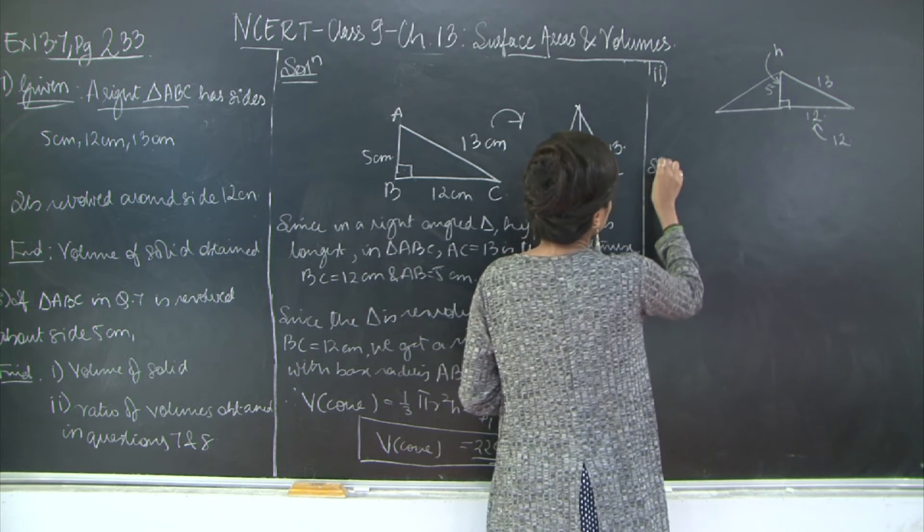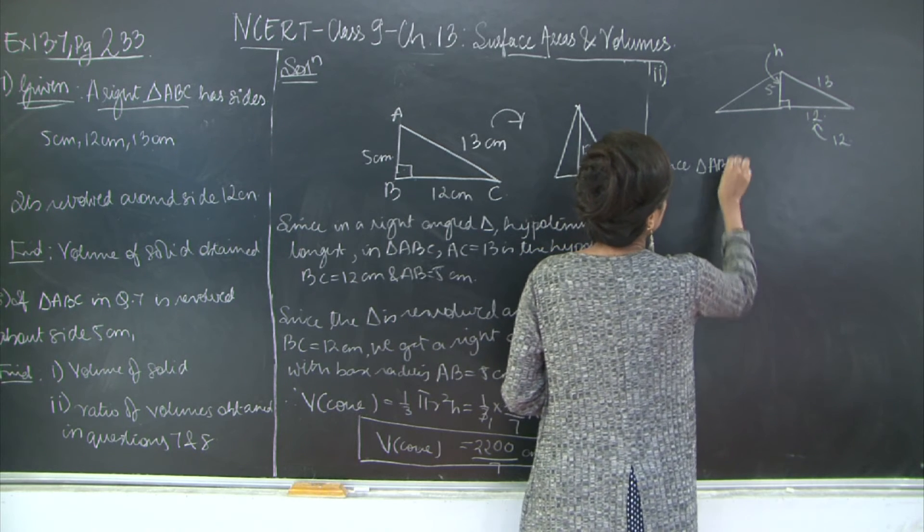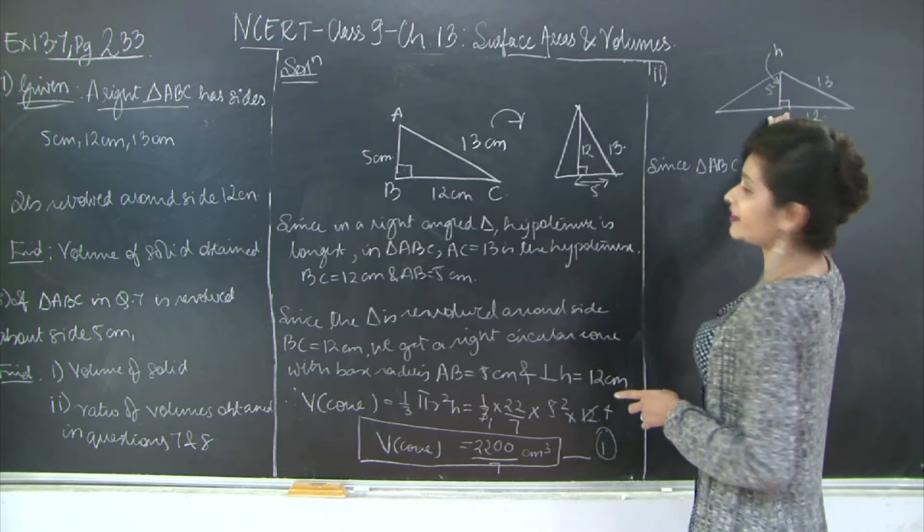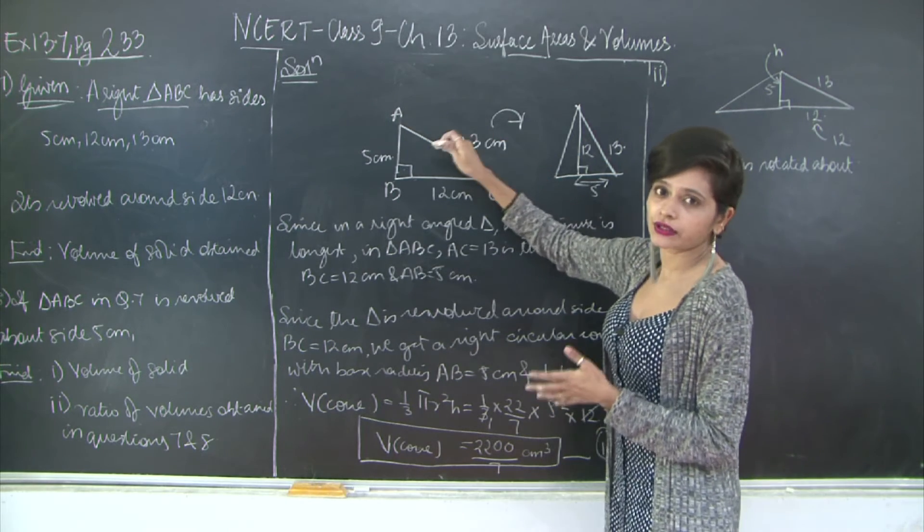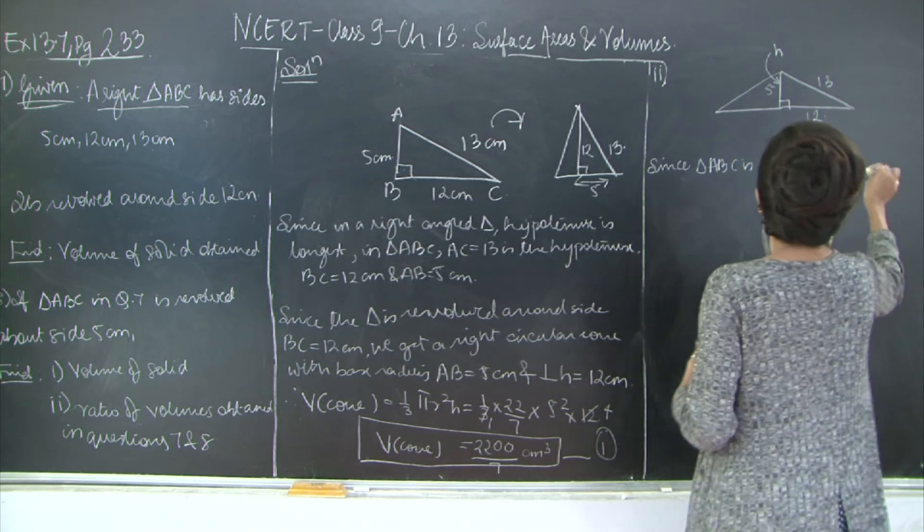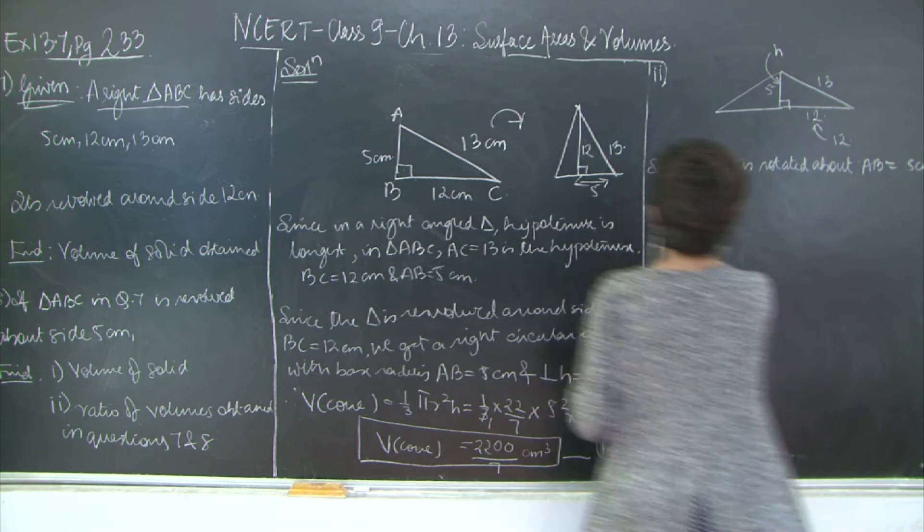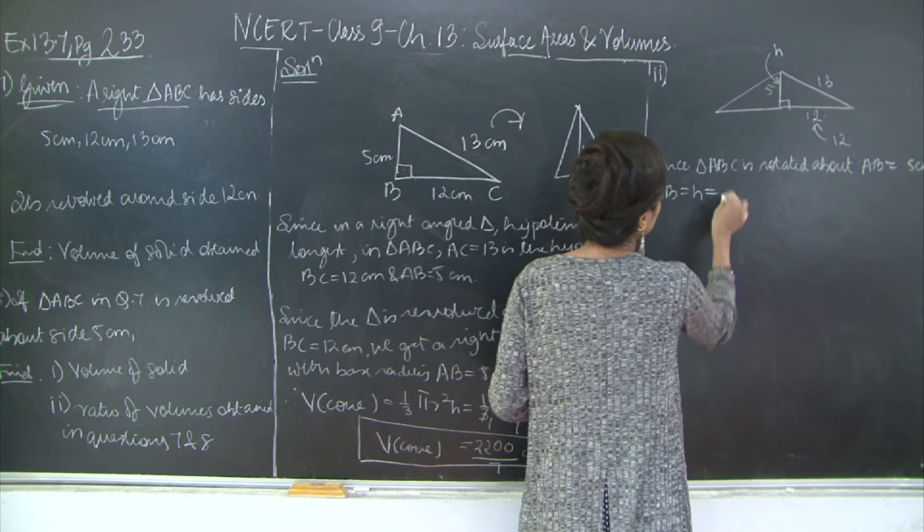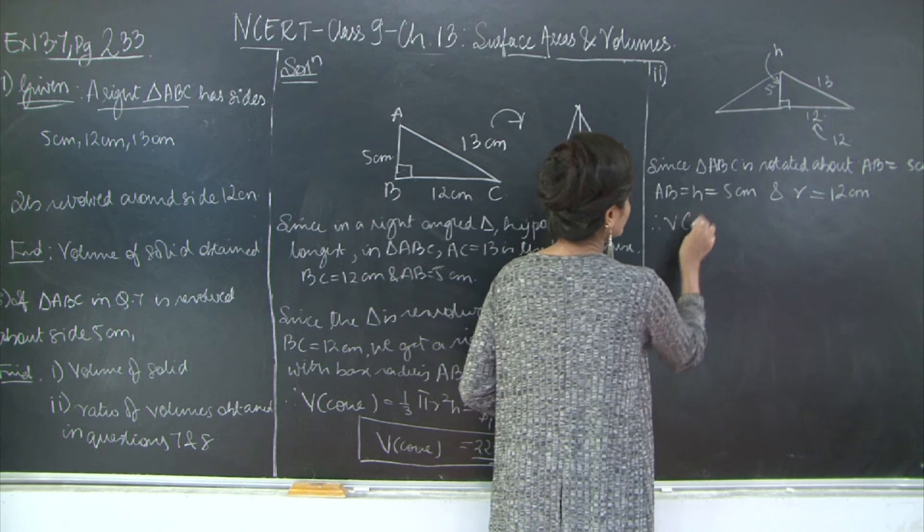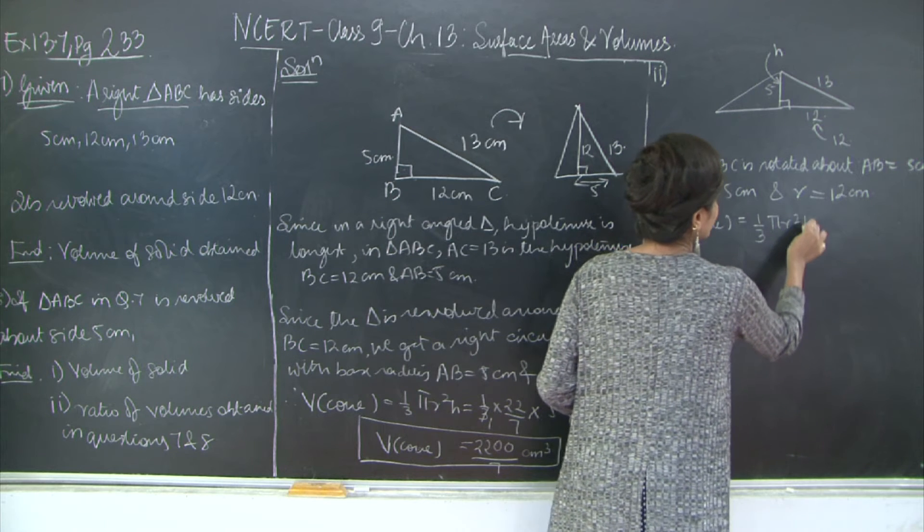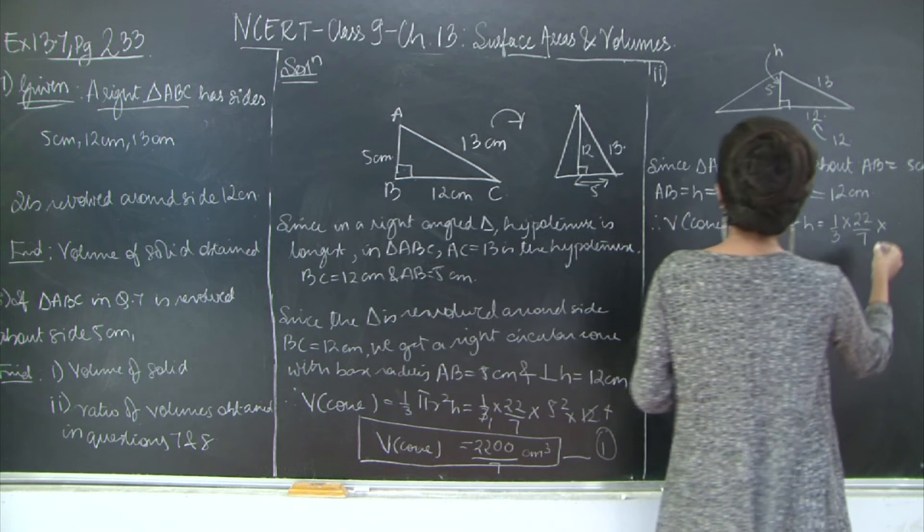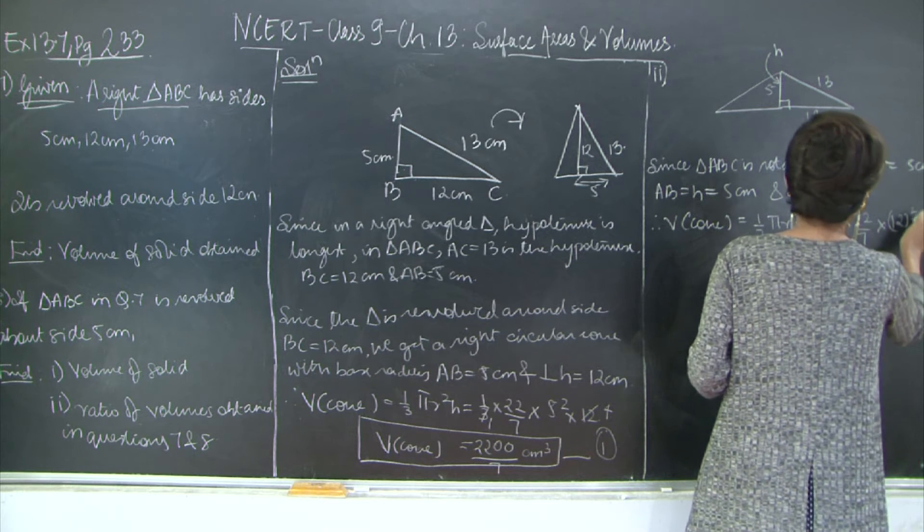So now you get the perpendicular height h as 5cm and the base radius as 12cm. So again since triangle ABC is rotated about AB is equal to 5cm, AB becomes the perpendicular height which is equal to 5cm and radius is equal to 12cm. Therefore, volume of cone is equal to 1/3 π r² h which is equal to 1/3 × 22/7 × r² which is 12² × h which is 5.